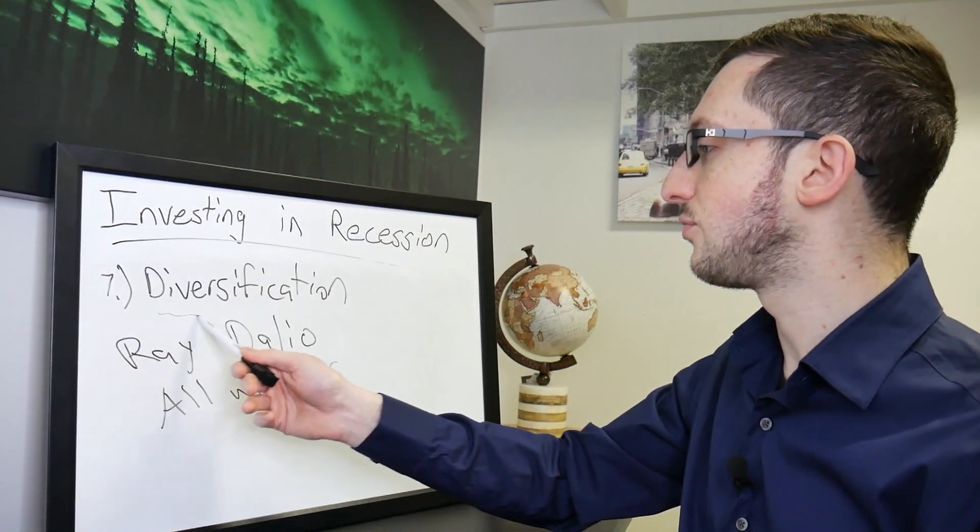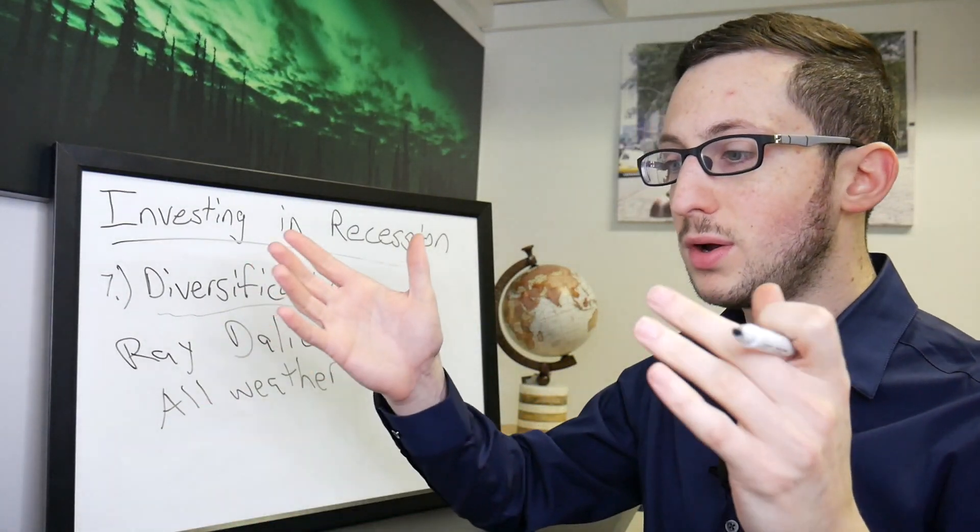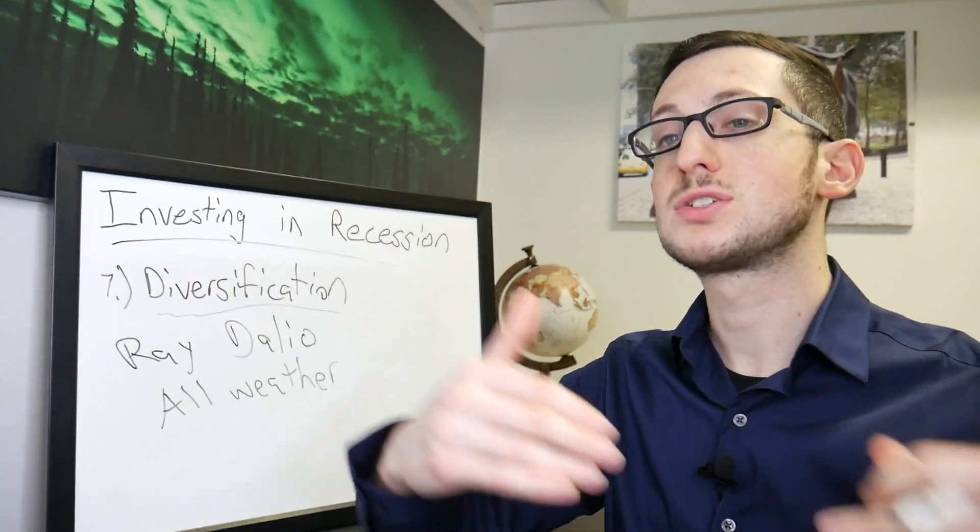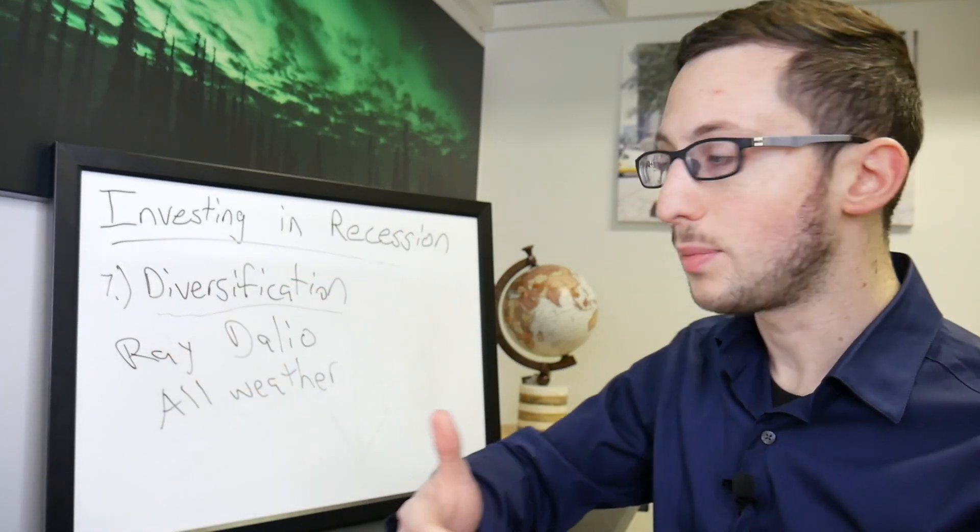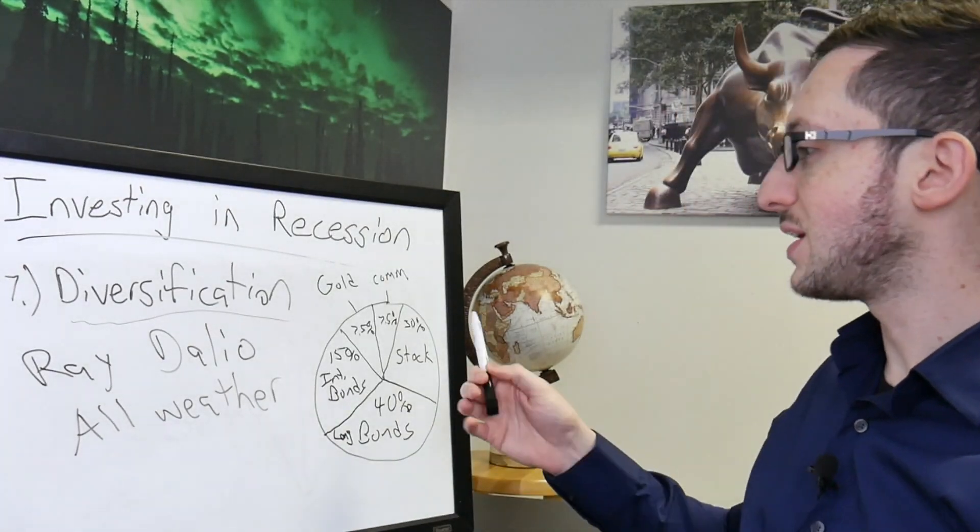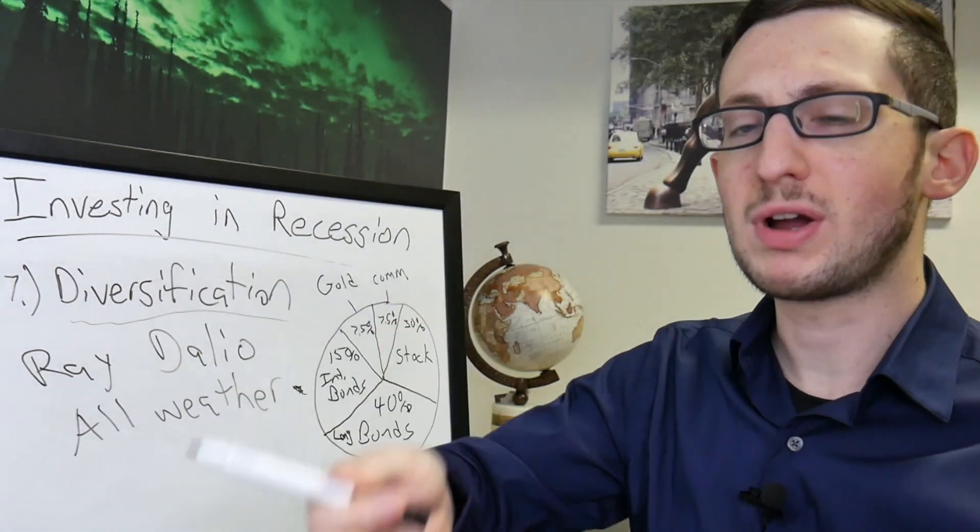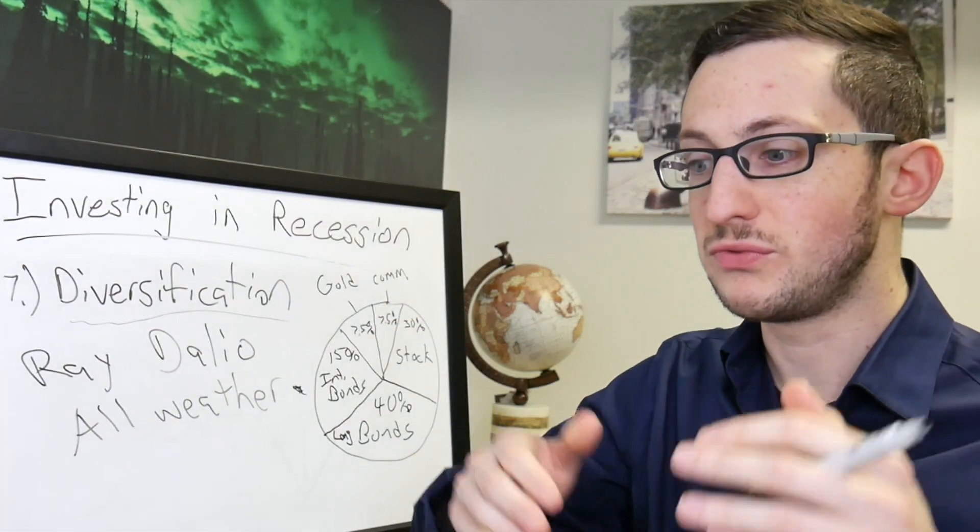So when you have a diverse portfolio you could somehow, when something is down, that means some other part of it is still up. So hopefully you guys could see this, maybe not, try to make it the best we can. But this is Ray Dalio's all weather portfolio, what he would recommend a normal person to invest in, of the proper way to diversify.